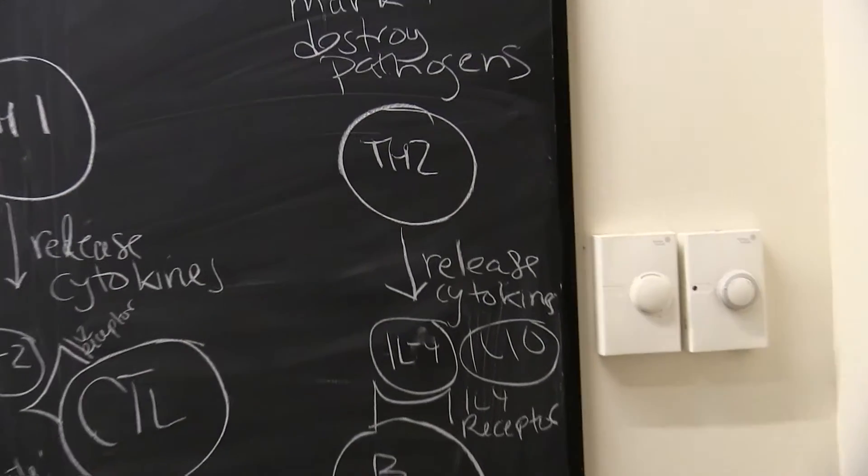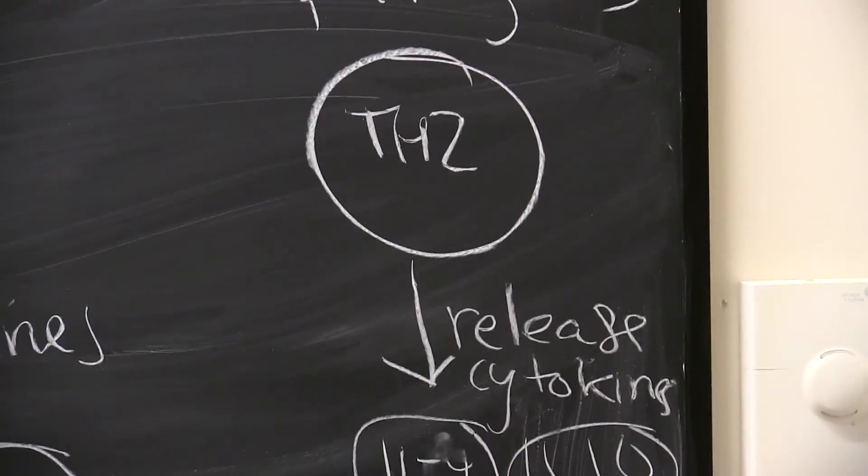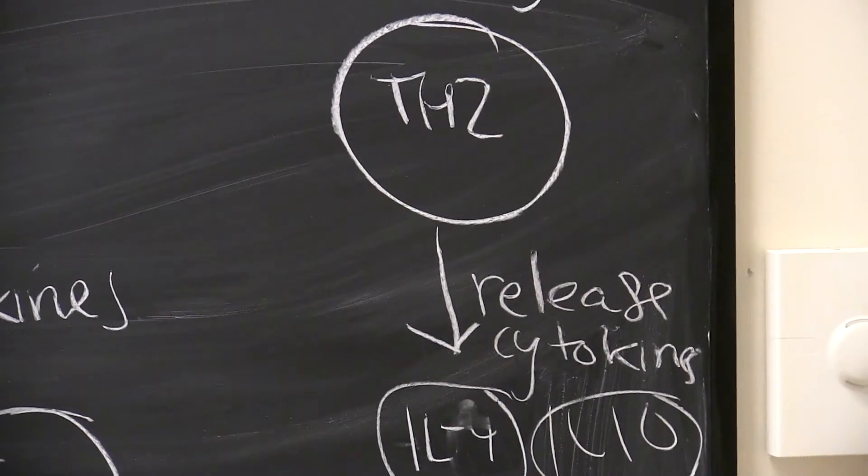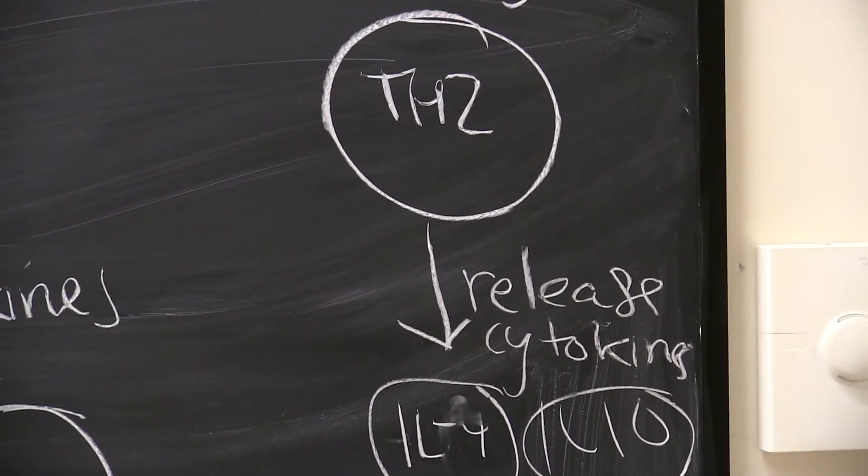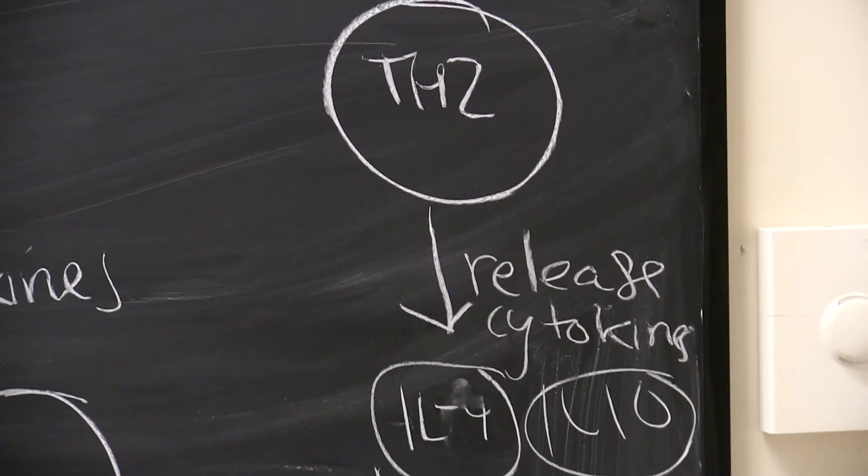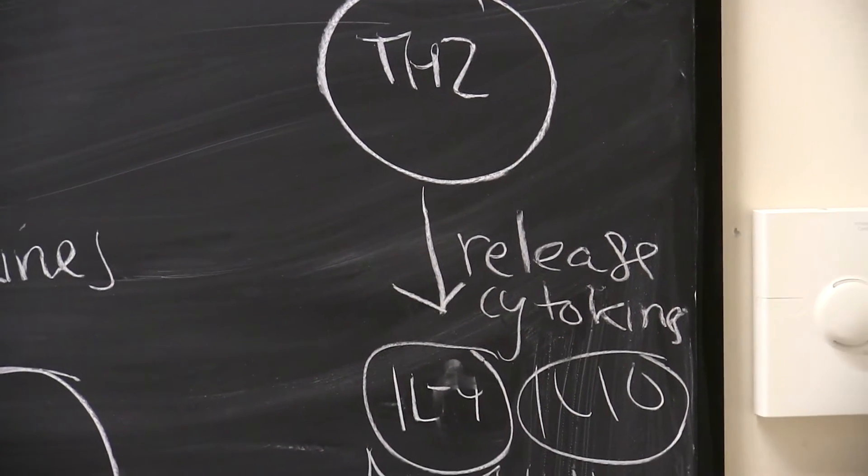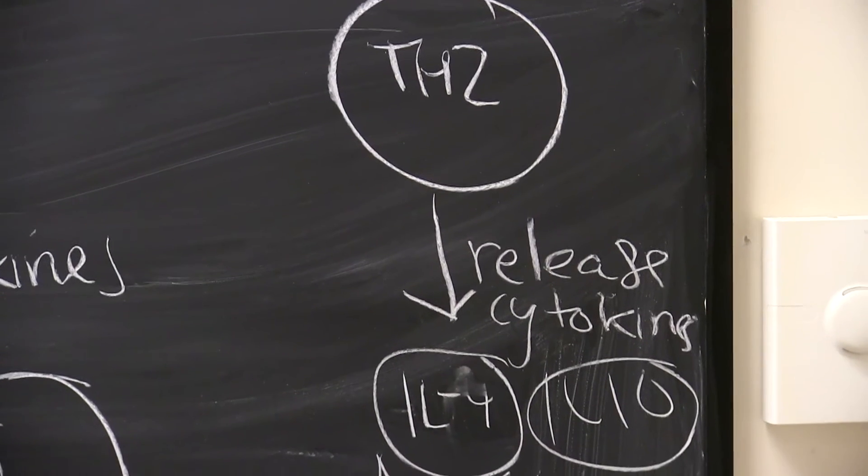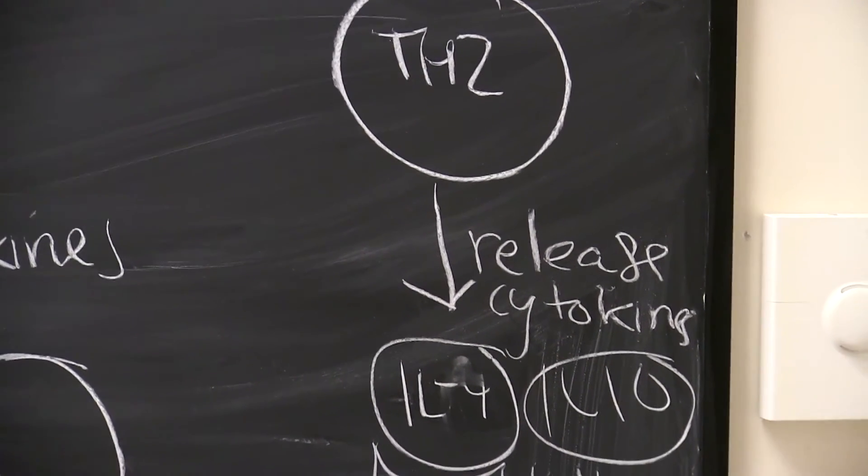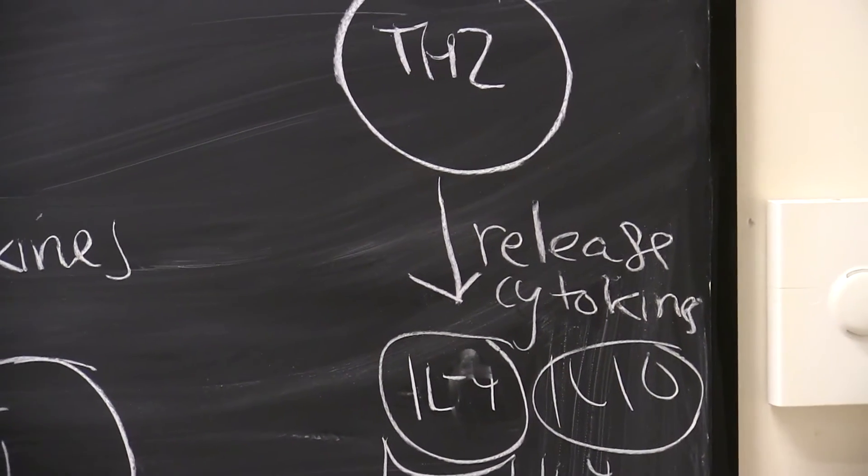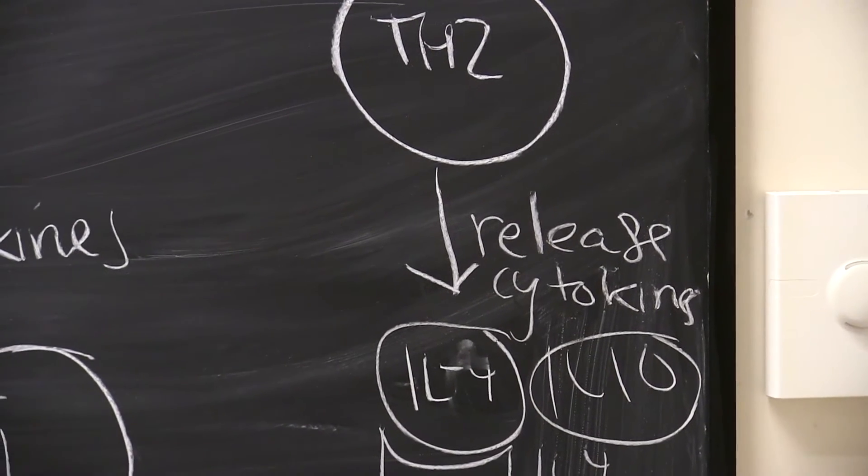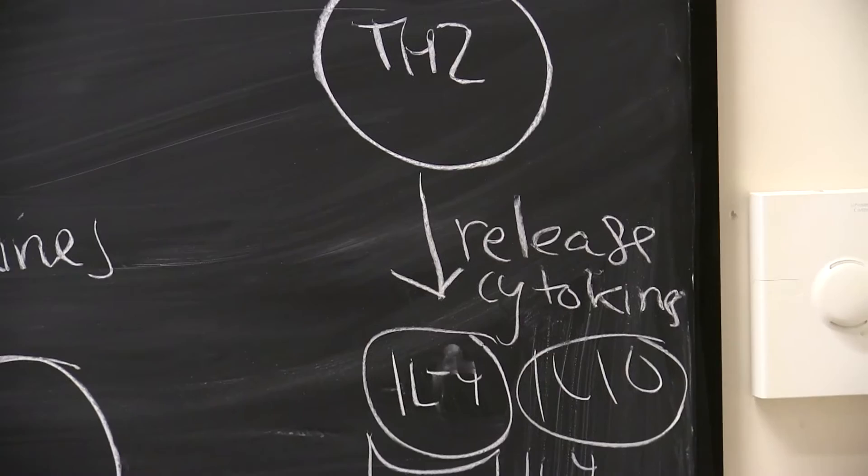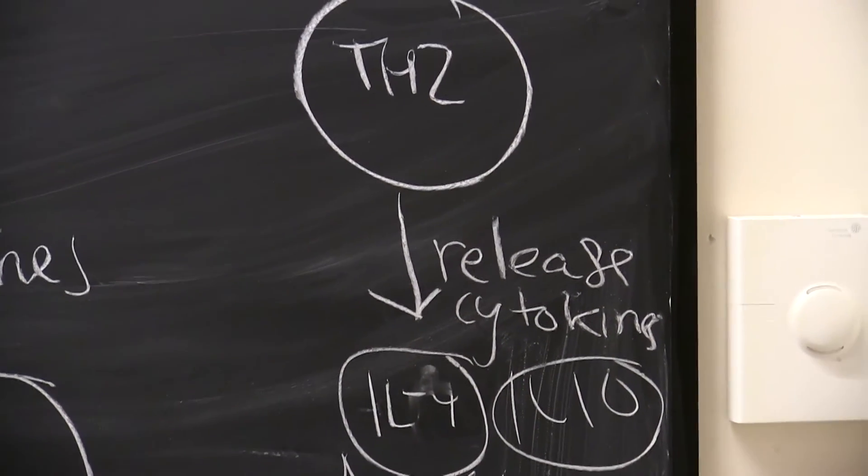A very similar thing happens: the helper T-cell type 2 does not directly activate B-cells. It actually releases cytokines, and these are different cytokines that are going to activate our B-cells. These cytokines are called IL-4 and IL-10. Again, remember there are hundreds of different cytokines, and it's really the combination of cytokines that are released from the T-cells that shapes what kind of immune response is going to happen.